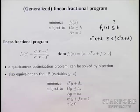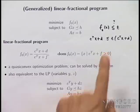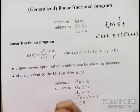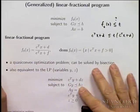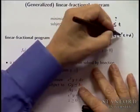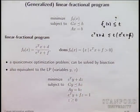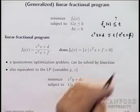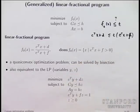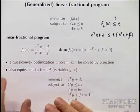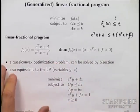A student points out that the second line should have E transpose rather than C transpose X plus E on the right side. The correction is confirmed: it should be E transpose. It was supposed to be the denominator — it just didn't work out that way.